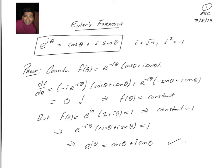If we combine things together, this cosine theta term is multiplied by minus i e to the minus i theta, and similarly here, it's i times cosine theta e to the minus i theta. So the cosine theta terms drop out. If we look at the sine theta terms, using the fact that i times minus i is actually equal to 1, we see the sine theta terms drop out as well. So df/d theta is actually 0.